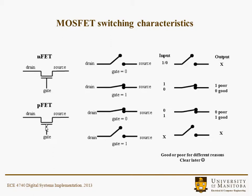For our PFET device — recognizable by the circle symbol — when the gate is 0, the switch is closed. In this case, a 0 comes through as a poor 0, meaning it wouldn't be able to pull something down all the way, but it's very good for pulling something up — a 1 comes through as a good 1. On the other hand, when the gate is 1 for the P-type device, the switch is off or open. If we have a 1 or a 0 on the input, the output is indeterminate. N and P devices are good or poor for passing 1s and 0s for different reasons.